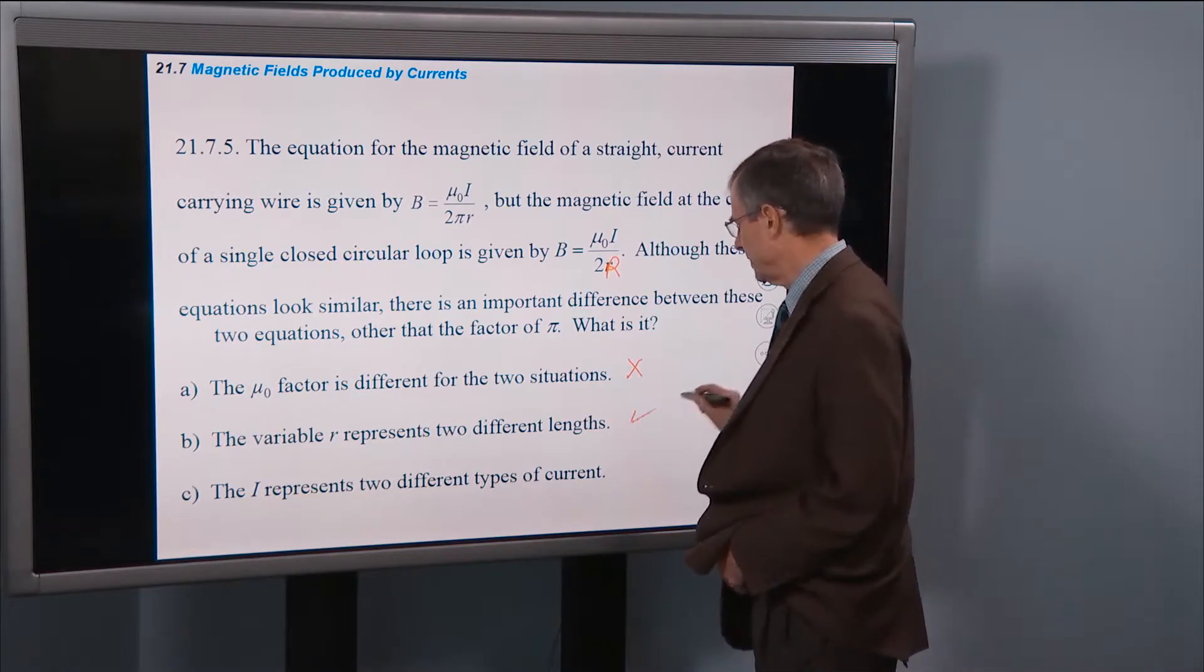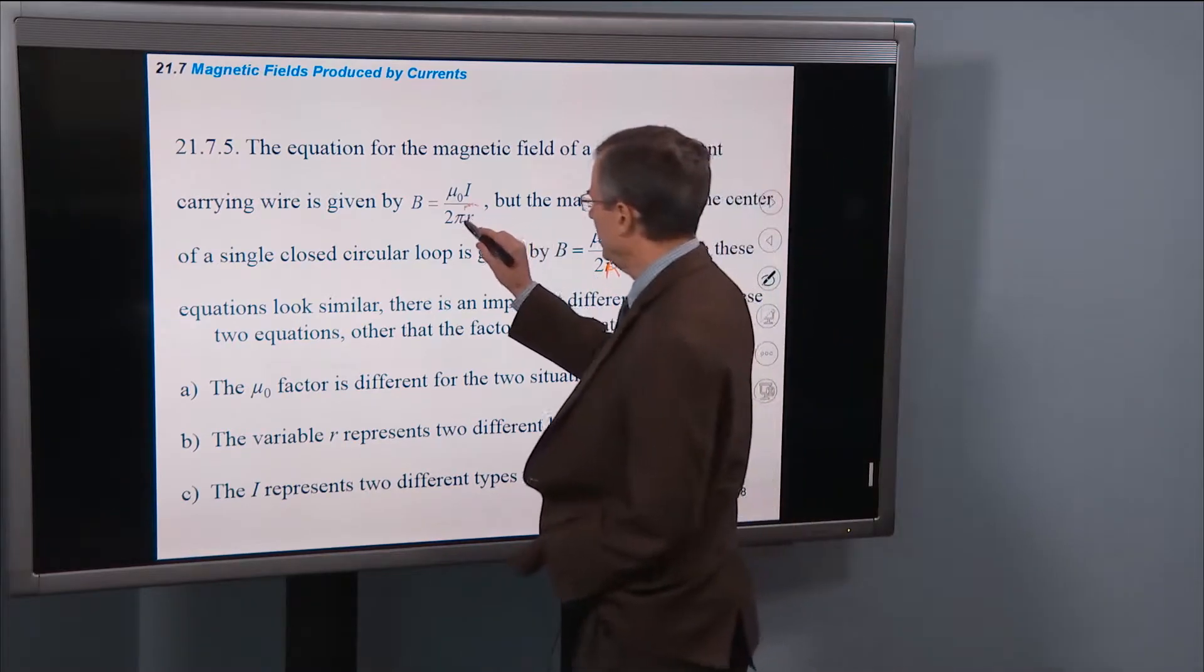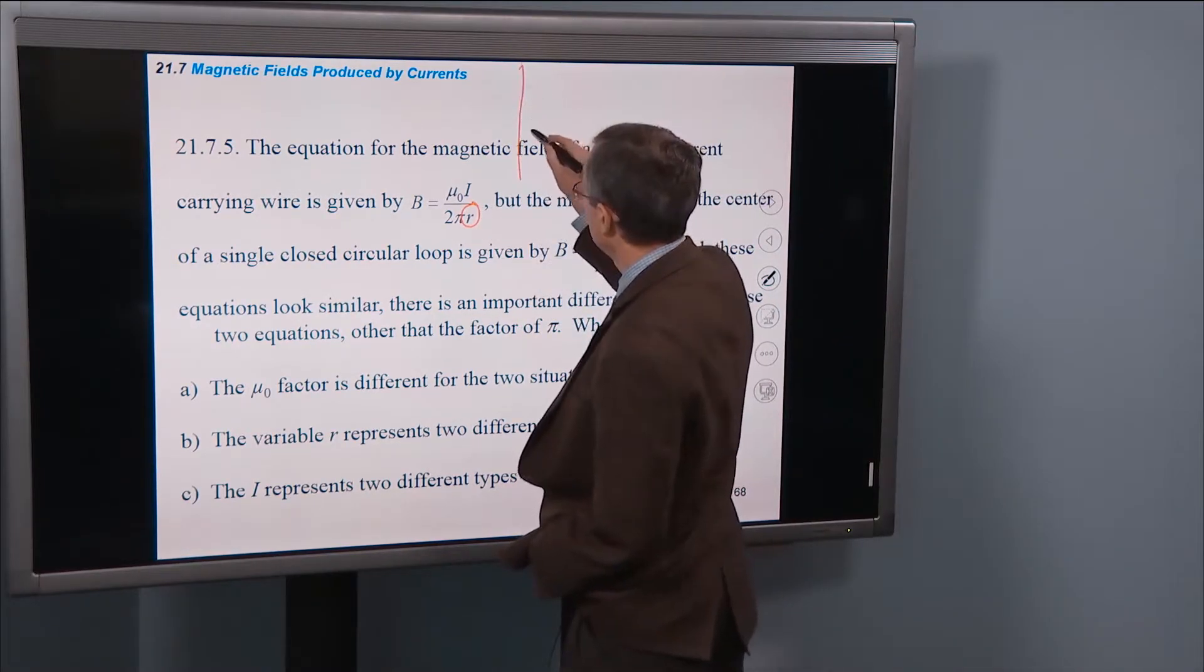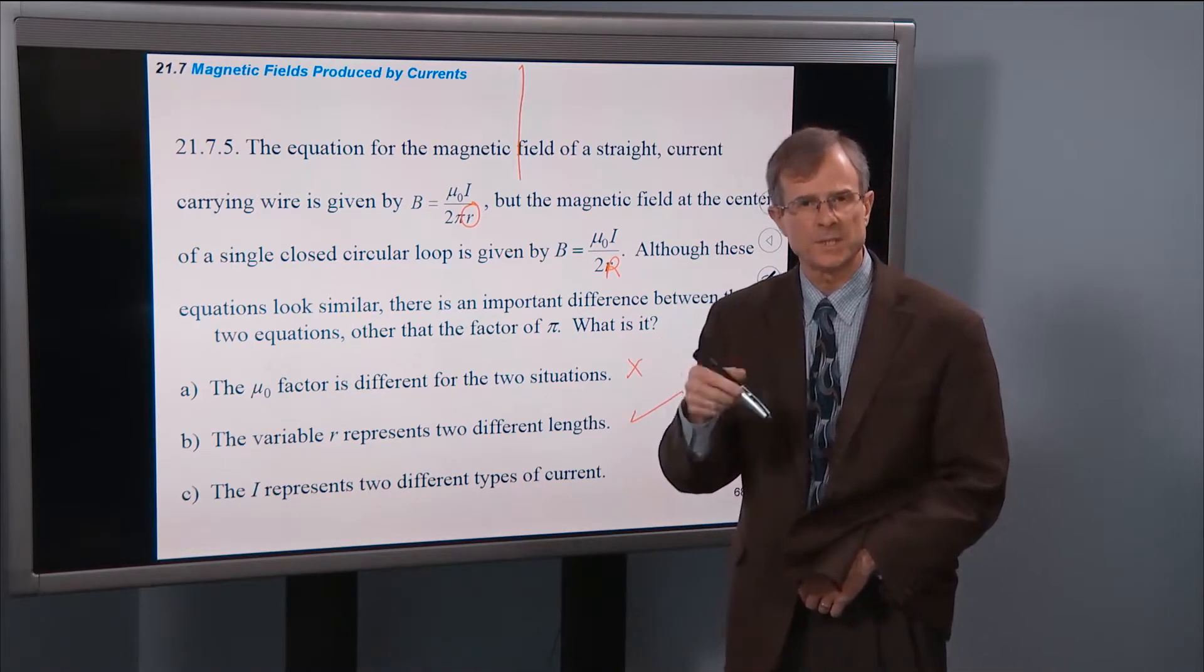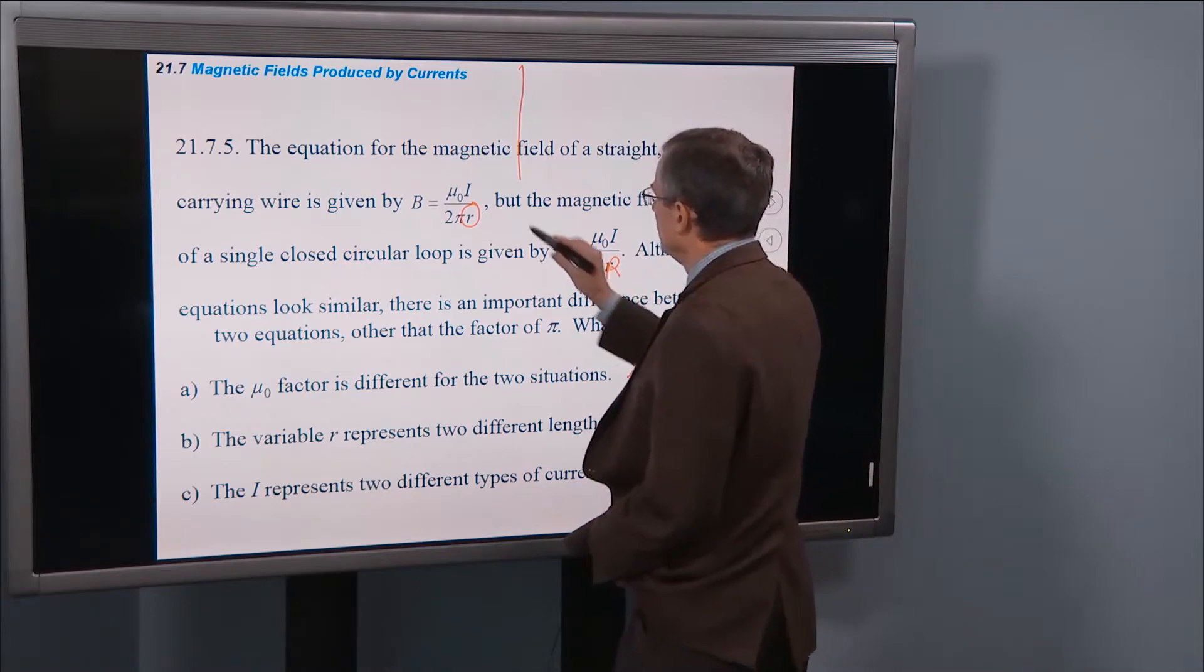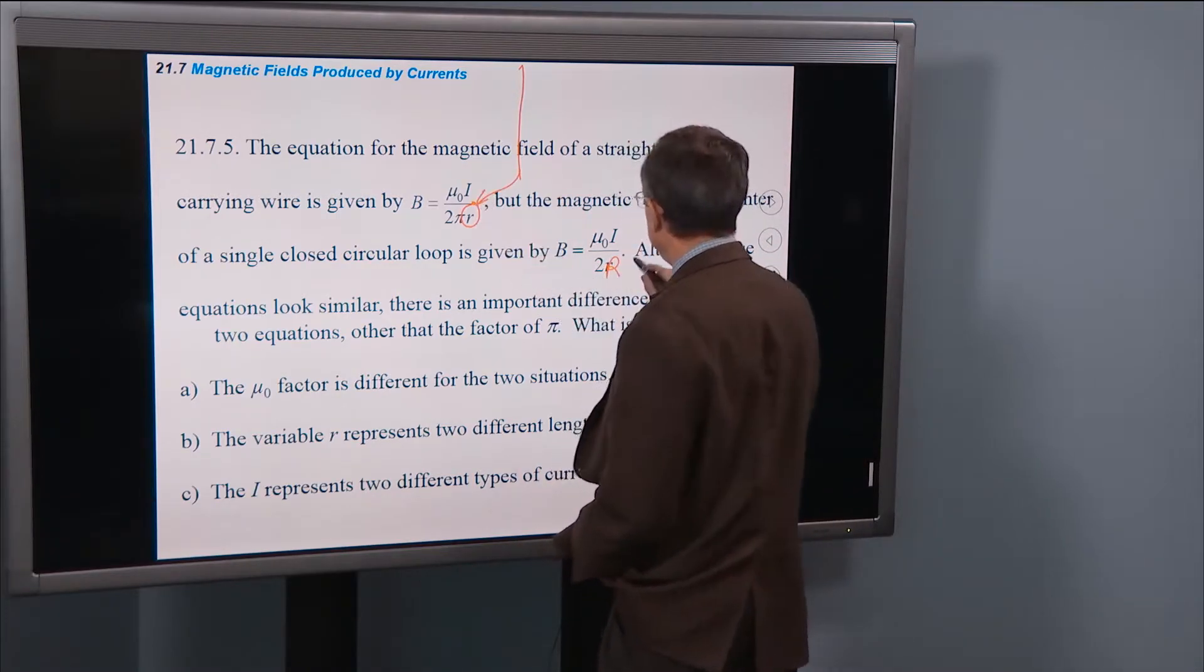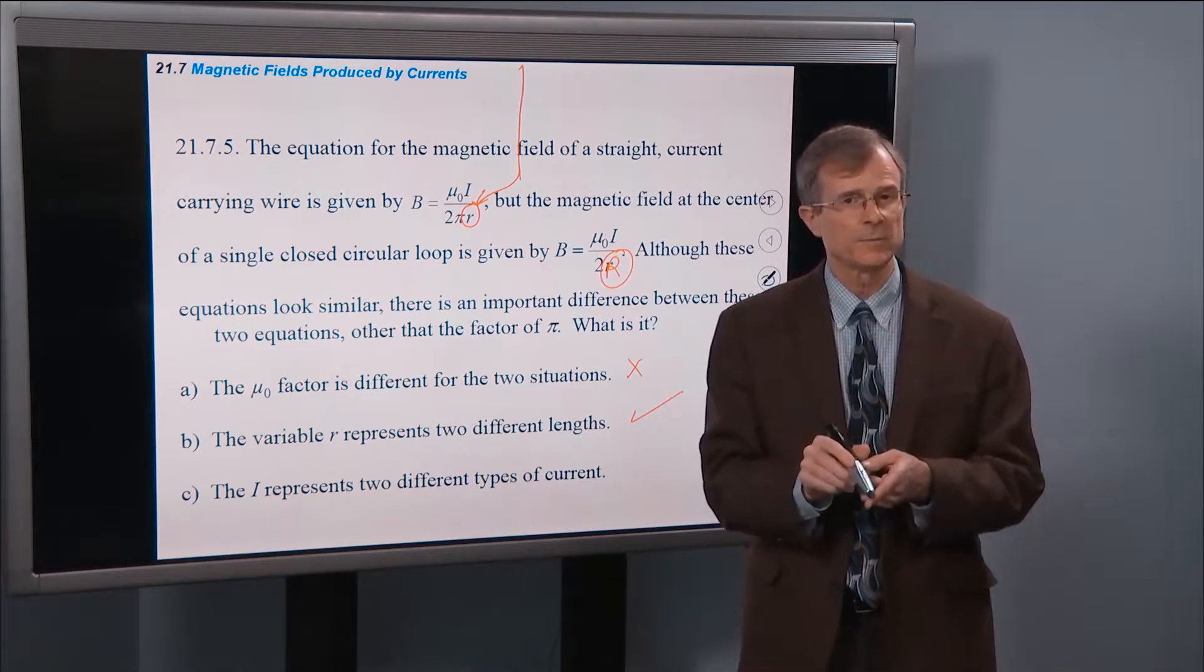And it's really this one that's the key here. Little r here for long straight wire represents the distance from the wire where we're interested in the magnetic field. And this big R represents just the radius of the loop.